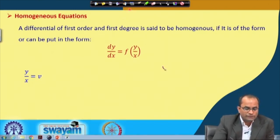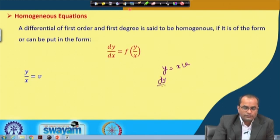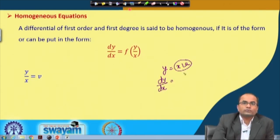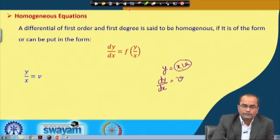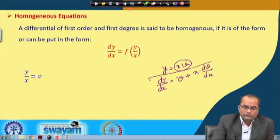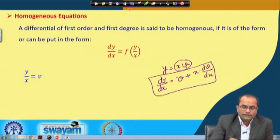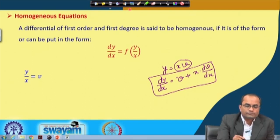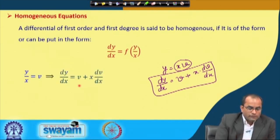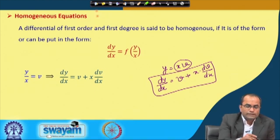The solution technique for a homogeneous equation is to substitute v = y/x as a new variable. From y = vx, differentiating by the product rule gives dy/dx = v + x·(dv/dx). This is the key relation we will use.